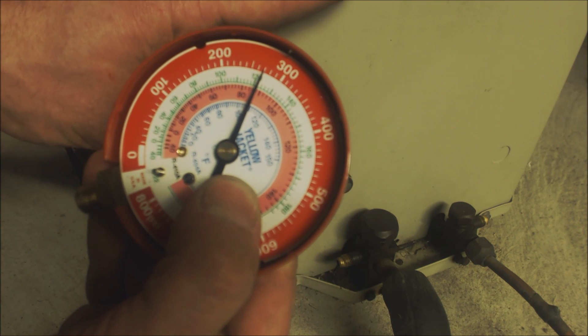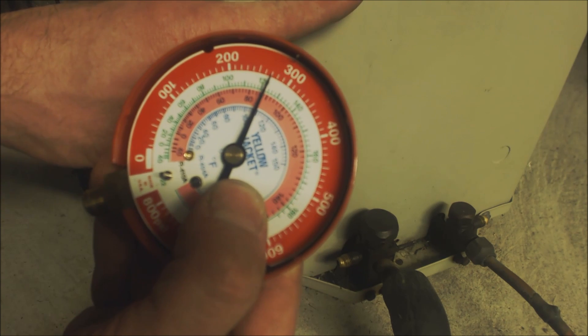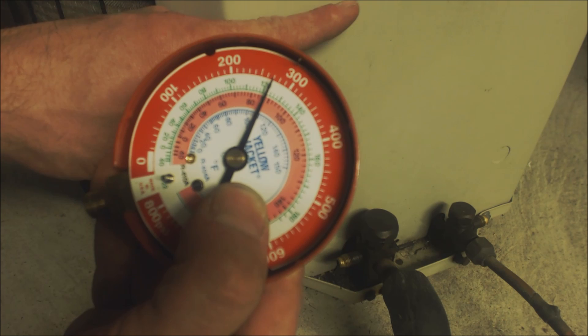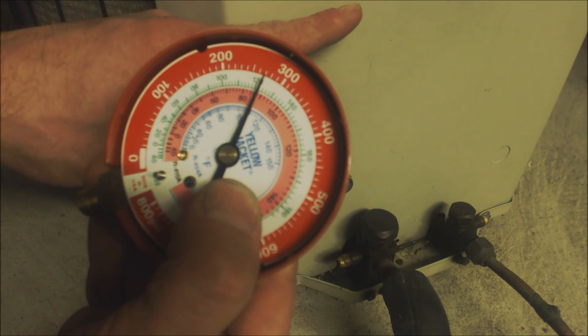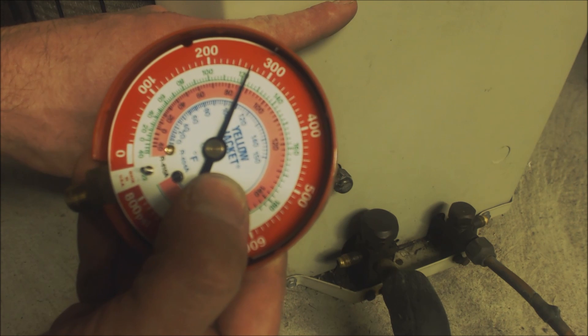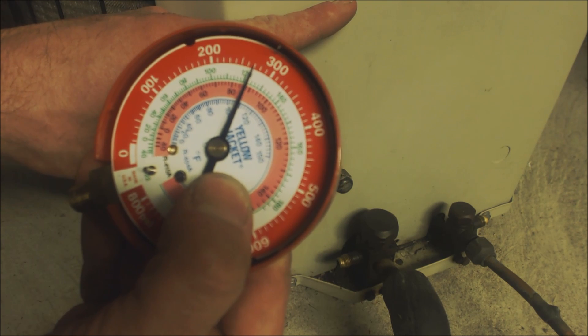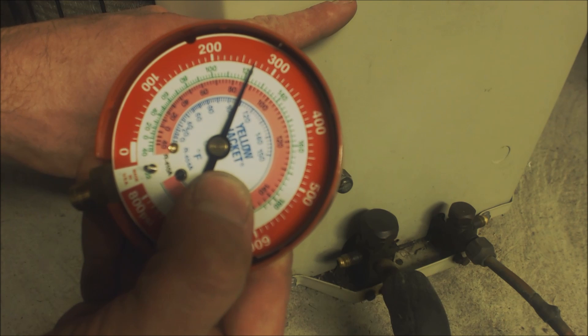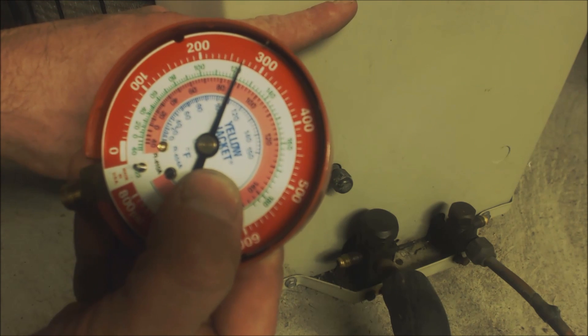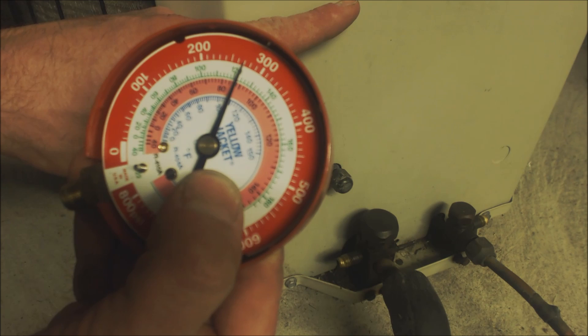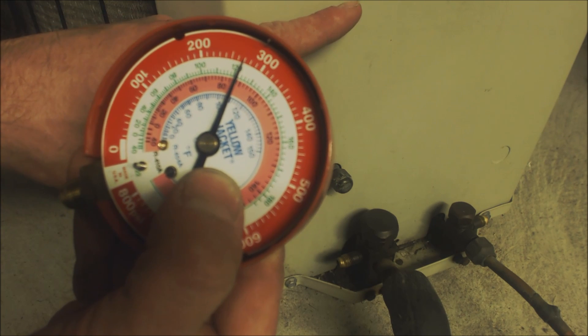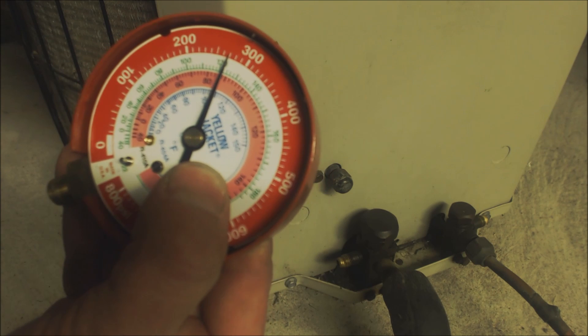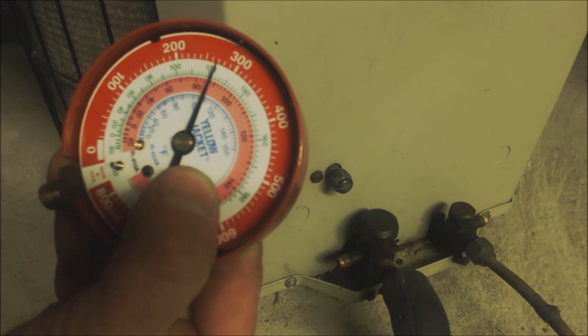Once you check your subcooling and it is maybe at 11, you want to go ahead inside the building and make sure you have an 18 to 21 degree temperature difference across the indoor coil. That would be a confirmation that you do have the correct refrigerant charge in the outdoor unit. That would happen as long as there's not too high humidity. You should be able to get 18 to 21 degree temperature difference between the return air and the supply air.